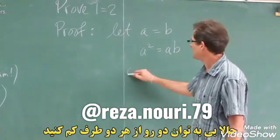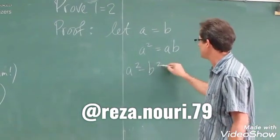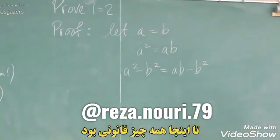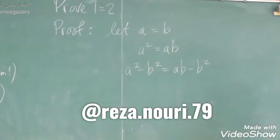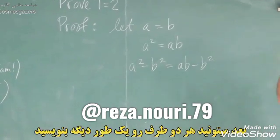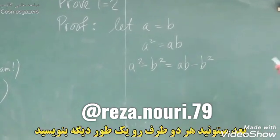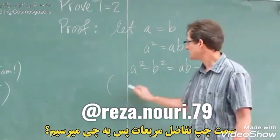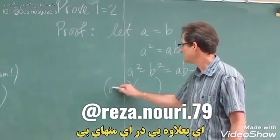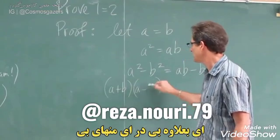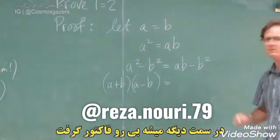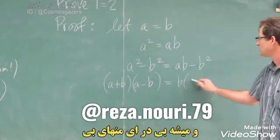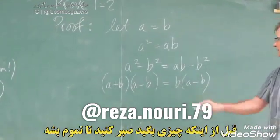Then subtract B squared from both sides — all legal operations. Then you can factor both sides by a different method. The left-hand side is a difference of squares, so you get A plus B times A minus B. On the right-hand side, you factor out B, and you get B times A minus B.